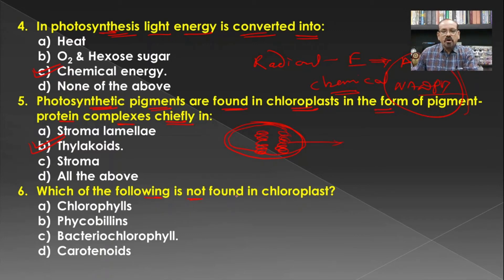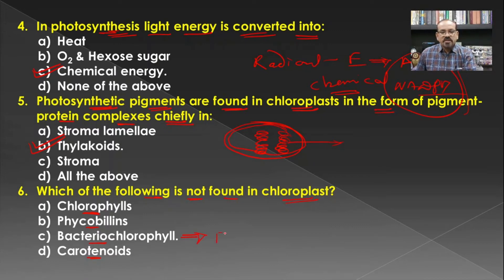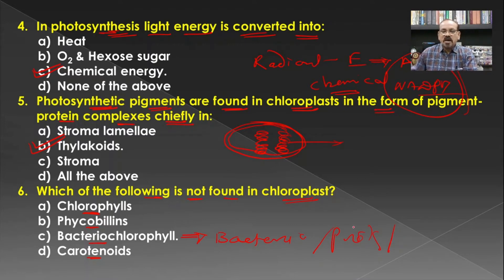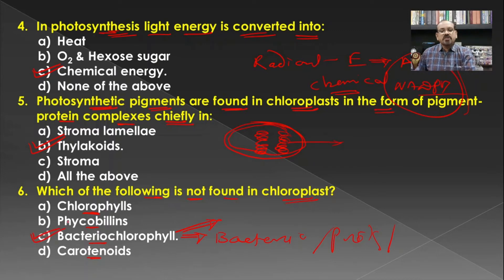Which of the following is not found in chloroplasts? The options are chlorophyll, phycobilins, bacteriochlorophyll, and carotenoids. Bacteriochlorophyll is found in bacteria, which are prokaryotic organisms in which cell organelles are absent. Hence chloroplasts are not present in such organisms, and bacteriochlorophyll is not present in the chloroplast. C is the correct answer for this question.